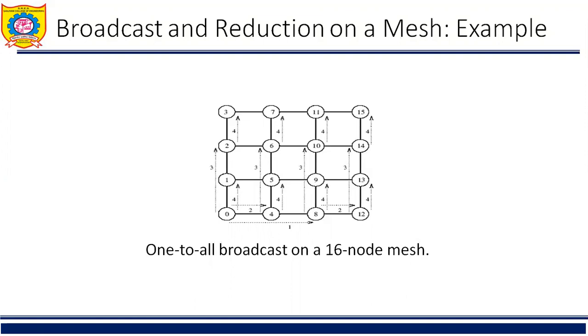First, a one-to-all broadcast is performed from the source to the remaining root p-1 nodes of the same row. Once all the nodes in the row of the mesh have acquired the data, they initiate a one-to-all broadcast in their respective columns. At the end of the second phase, every node in the mesh has a copy of the initial message. The communication steps for one-to-all broadcast on mesh are illustrated in this figure.